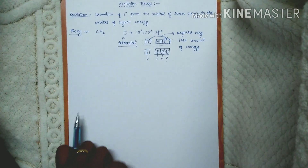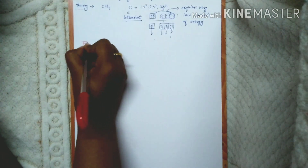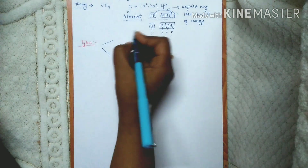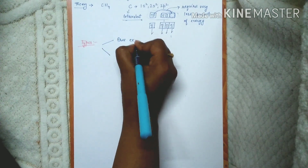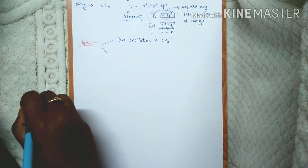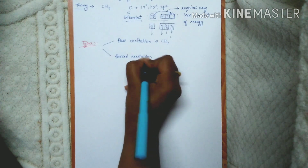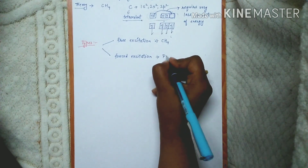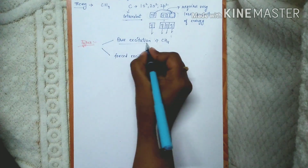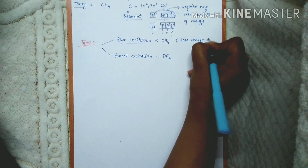Now we are going to study about the types of excitations. There are actually two types: one is free excitation, which was the case of methane, and next is forced excitation, for example in the case of PF5, which we will study later on.